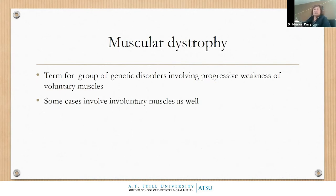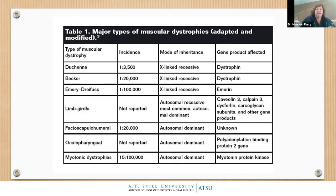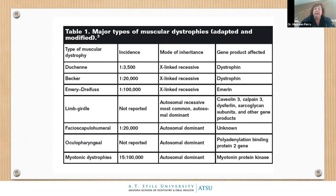Muscular dystrophy is a term for a group of genetic disorders involving progressive weakness of voluntary muscles and sometimes involuntary muscles. The major types are Duchenne muscular dystrophy and Becker muscular dystrophy — both X-linked recessive — which is why we see this more in boys. Women with one affected X chromosome are carriers but don't show the disease, while men with only one X chromosome will express it.